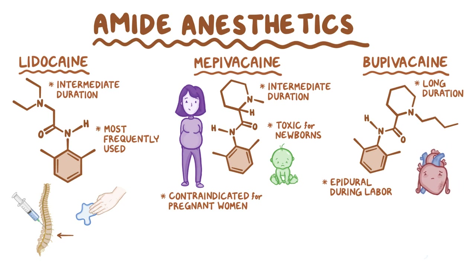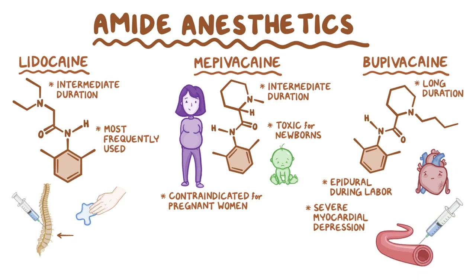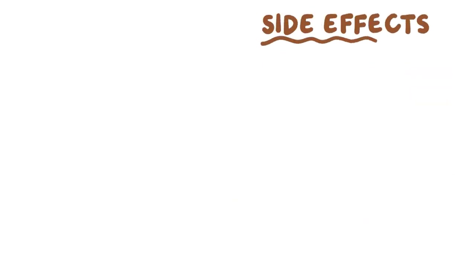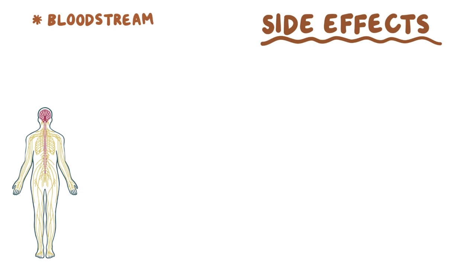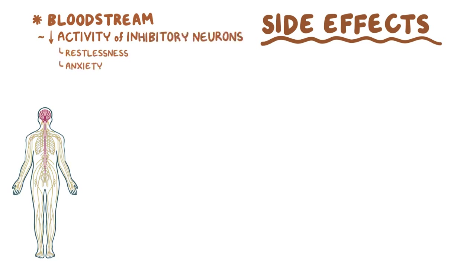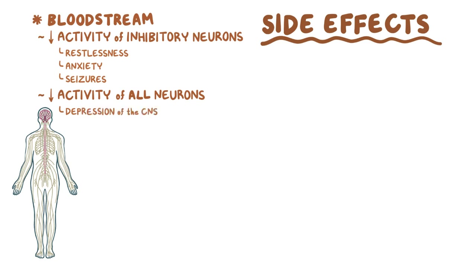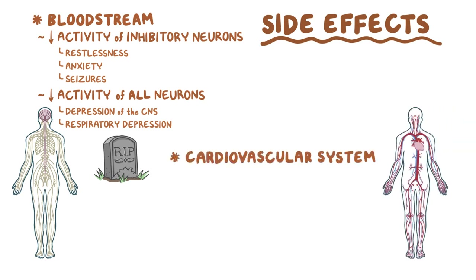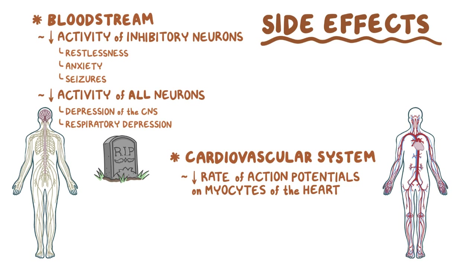Bupivacaine has a long duration of action and its main application is epidural anesthesia during labor. It is very cardiotoxic and can cause severe myocardial depression if accidentally administered into a blood vessel. Both amide and ester local anesthetics have similar side effects: if they enter the bloodstream, they first decrease activity of inhibitory neurons, leading to restlessness, anxiety, and seizures. At larger doses, they depress all neurons causing CNS and respiratory depression, which can lead to death. In the cardiovascular system, they decrease the rate of action potentials on heart myocytes, causing bradycardia and decreased cardiac output, and generally cause vasodilation resulting in hypotension.